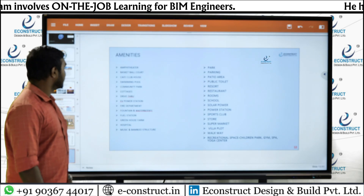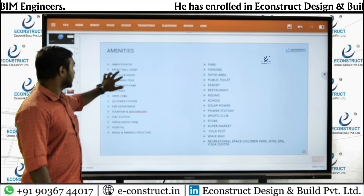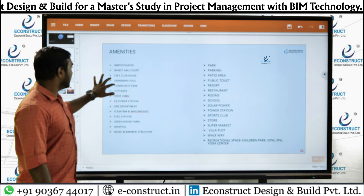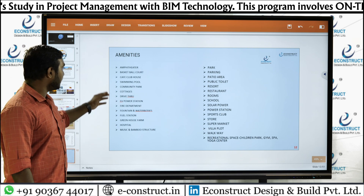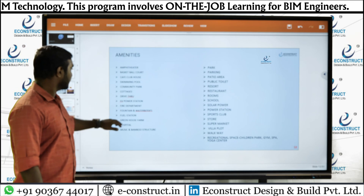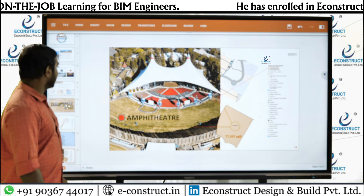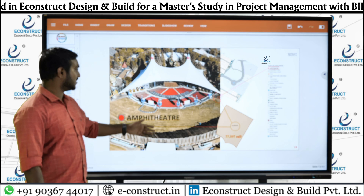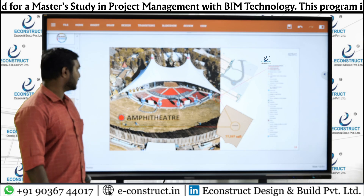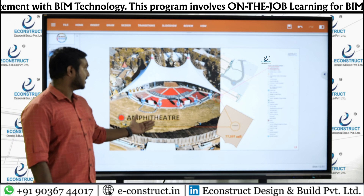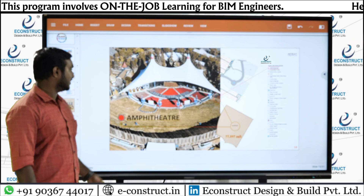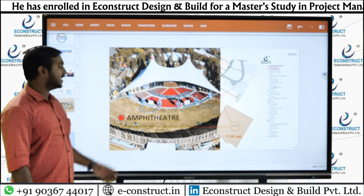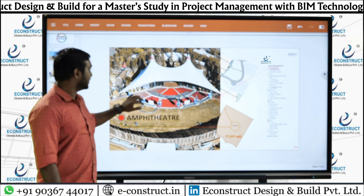Here you can see the amenities of the project. We have given a basketball court. The famous sports in Texas are baseball and soccer, but they require a large area of land, so we have given a basketball court which is also very popular in Texas. We have also provided an amphitheater of 77,000 square feet. The main reason is that only three amphitheaters are well-known in Texas, and they earn a lot because many concert shows happen in the area.